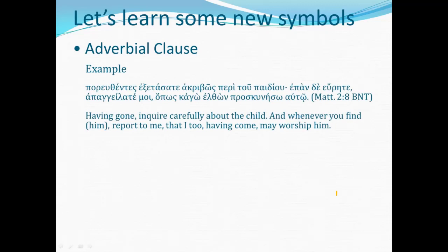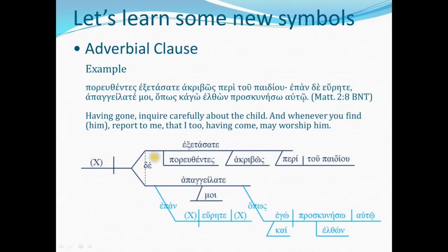Here's a somewhat longer example with more than one adverbial clause. This is Herod instructing the wise men: 'Having gone, inquire carefully about the child, and whenever you find him, report to me that I too, having come, may worship him.' In the diagram, the understood subject 'you' refers to the wise men with a series of verbs: 'you seek carefully concerning the child and report to me.' The clause 'report to me' has two adverbial clause modifiers — a temporal clause telling when ('whenever they find the child') and a final clause expressing purpose ('that Herod too may worship him').